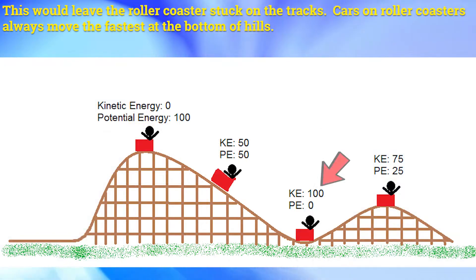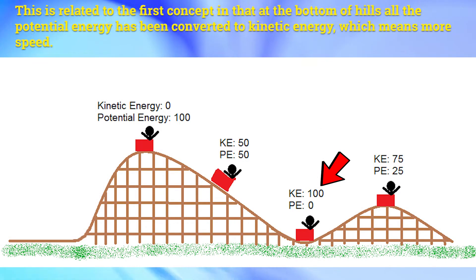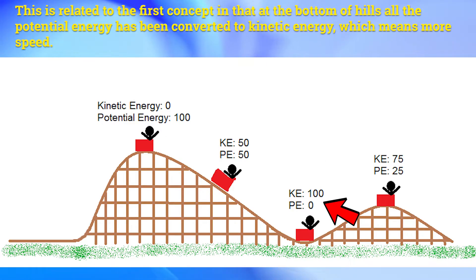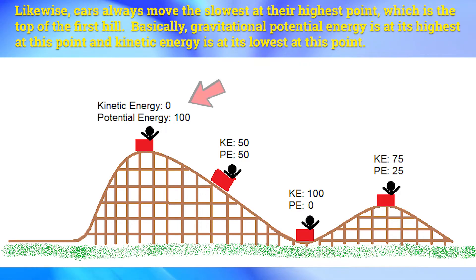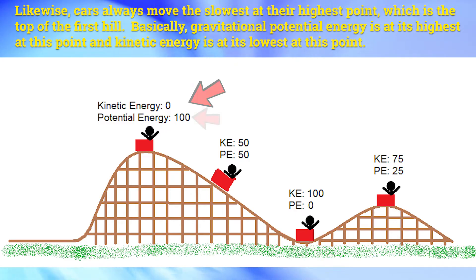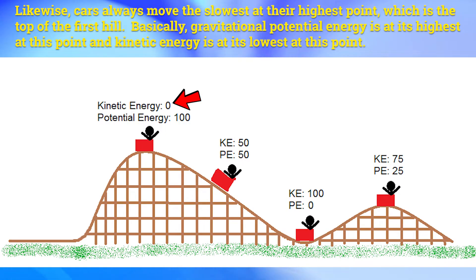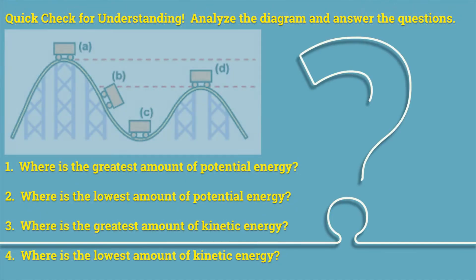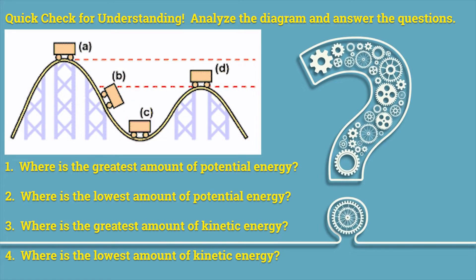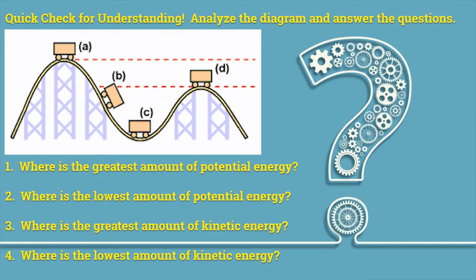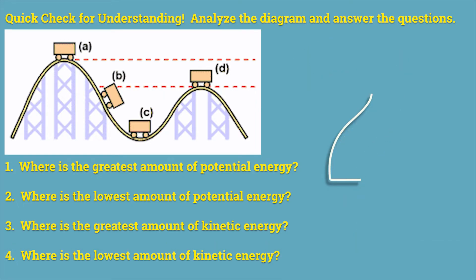Cars on roller coasters always move the fastest at the bottom of the hills. At the bottom of the hills, all the potential energy has been converted to kinetic energy, which means more speed. Likewise, cars always move the slowest at the highest point, which is the top of the first hill. Basically, gravitational potential energy is at its highest at this point and kinetic energy is at its lowest. Quick check for understanding: analyze the roller coaster diagram. Pause the video and take two minutes to identify where the greatest and lowest amounts of potential energy would be, and do the same for the highest and lowest amounts of kinetic energy.